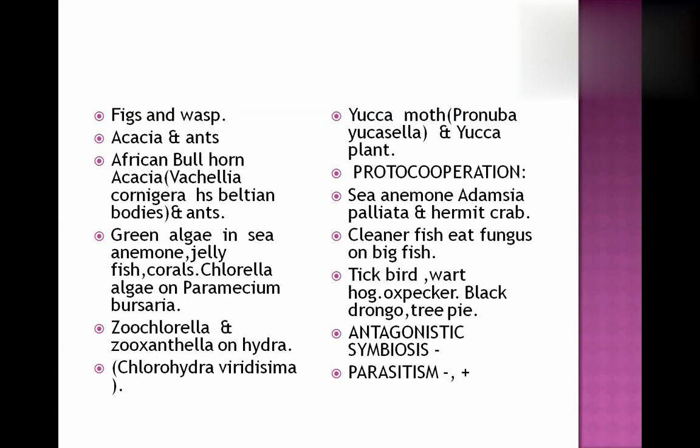Zoochlorella and zooxanthellae are present on the body of hydra — this relationship is also beneficial. Yucca moth is present on yucca plant. They pollinate the yucca plant and in turn get protection and food from the plant. This type of relationship is beneficial for both of them.